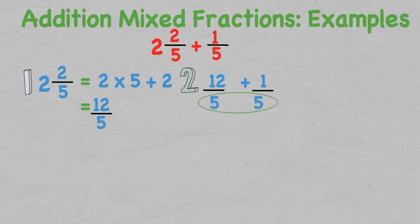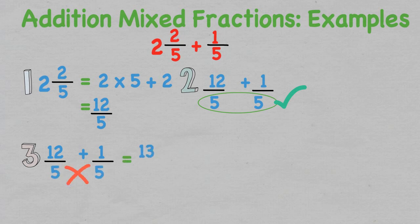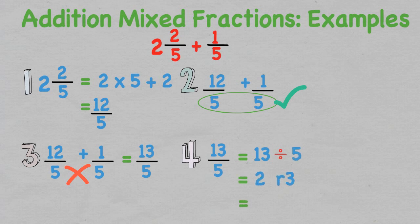This leaves us with 12 over five. The fractions are alike as the denominators are the same, so we add the numerators together but not the denominators: 12 plus one, which leaves us with 13 over five. We can simplify this back into a mixed fraction by dividing the numerator by the denominator: 13 divided by five is two with three left over. Therefore the final answer is two and three over five.